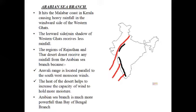The leeward side and rain shadow of the Western Ghats receives less rain. For example, Mahabaleshwar, situated on the western side of the Western Ghats, receives more rainfall — about 250 centimeters annually. Whereas Pune, situated on the leeward side of the Western Ghats, receives less rainfall — nearly 70 centimeters annually.